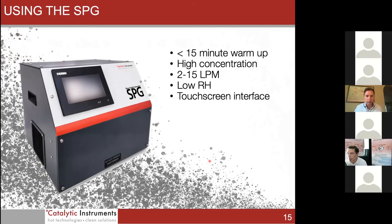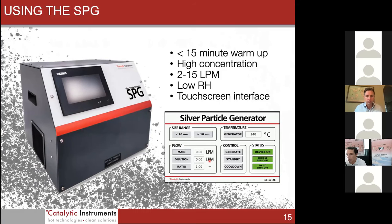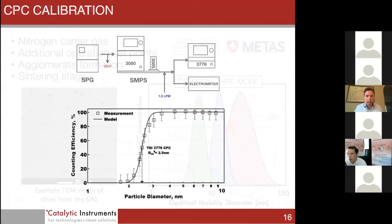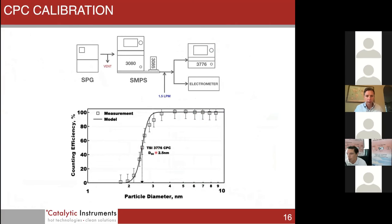Using the SPG, it has less than 15 minute warm-up time and can be operational within half an hour or so. High concentration, 2 to 15 liters per minute outflow, very low RH less than 5% on the output, and is operated by a touchscreen interface. Here's an example of a CPC calibration. It's relatively simple - you go backwards and forwards across different particle diameters to derive this sigmoid curve, figuring out what your D50 cut of your CPC is. Our CPC was pretty much within calibration spec, so that's one application of the SPG.